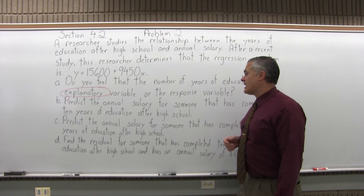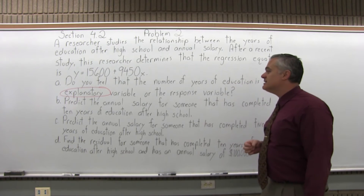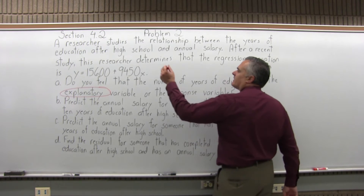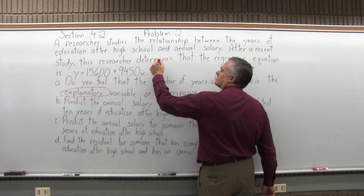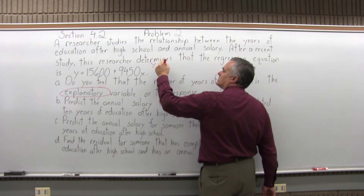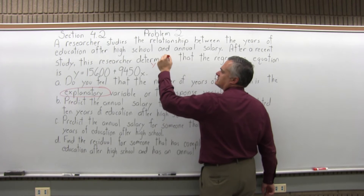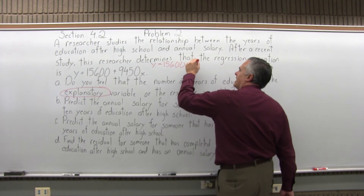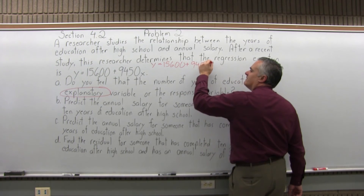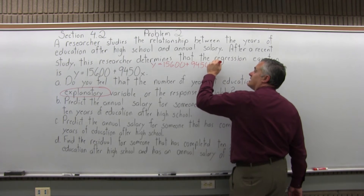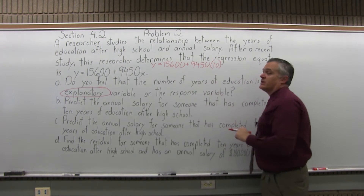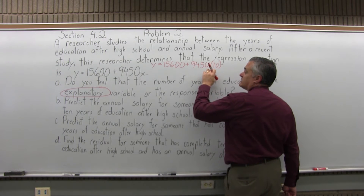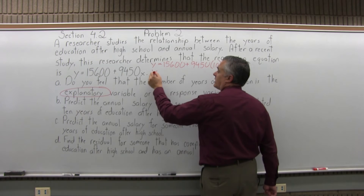Part B: predict the annual salary for someone that has completed 10 years of education after high school. So I'm going to go y equals 15,600 plus 9,450 times x, which becomes times 10, because the question asks us to predict for 10 years of education. You have an add and a multiply, so you must do the multiply first because of the order of operations.